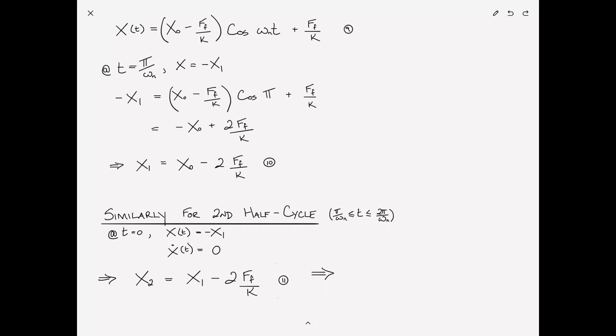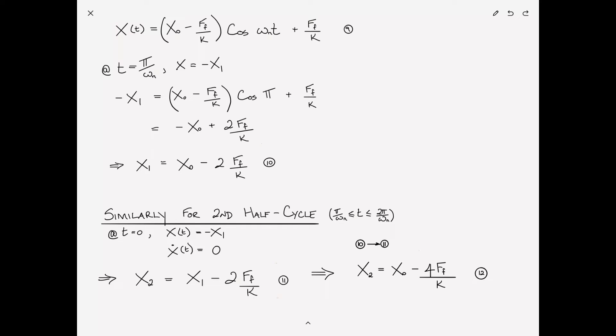Substituting equation ten into equation eleven gives equation twelve: X2 equals X sub zero minus four F sub F over K. In one complete cycle, the reduction in amplitude is four F sub F over K — four times the theoretical spring displacement due to friction.